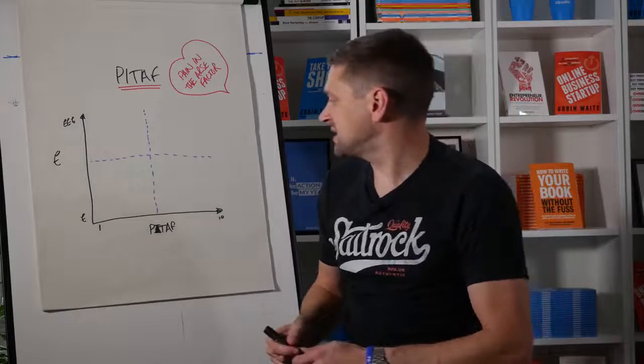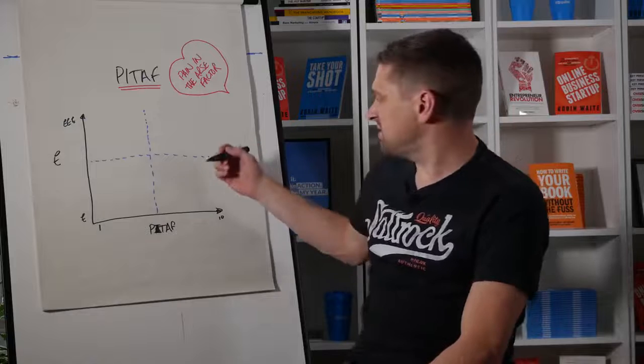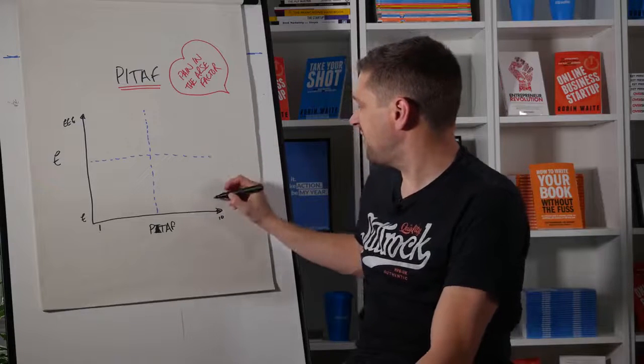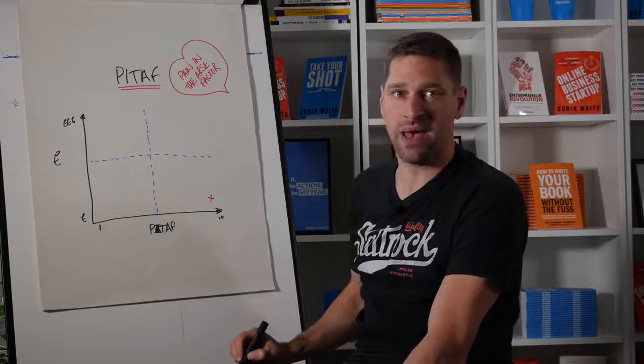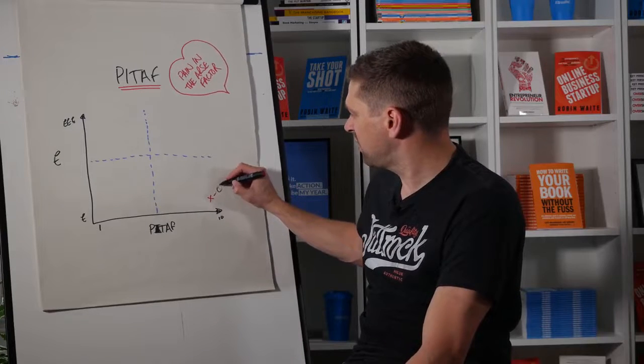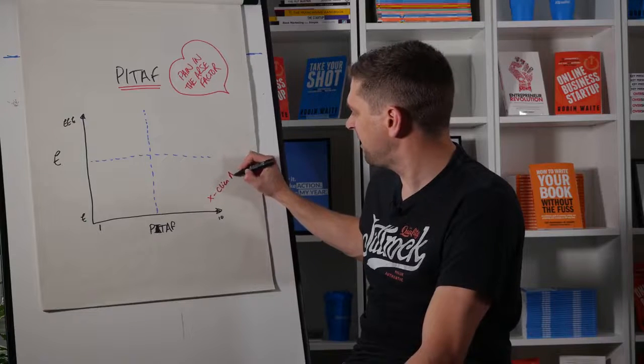So how this basically works is imagine if I was to take a client and they are a real pain in the arse and they're not paying me much money. I would put them down here and I would put whatever their name is. So client A.